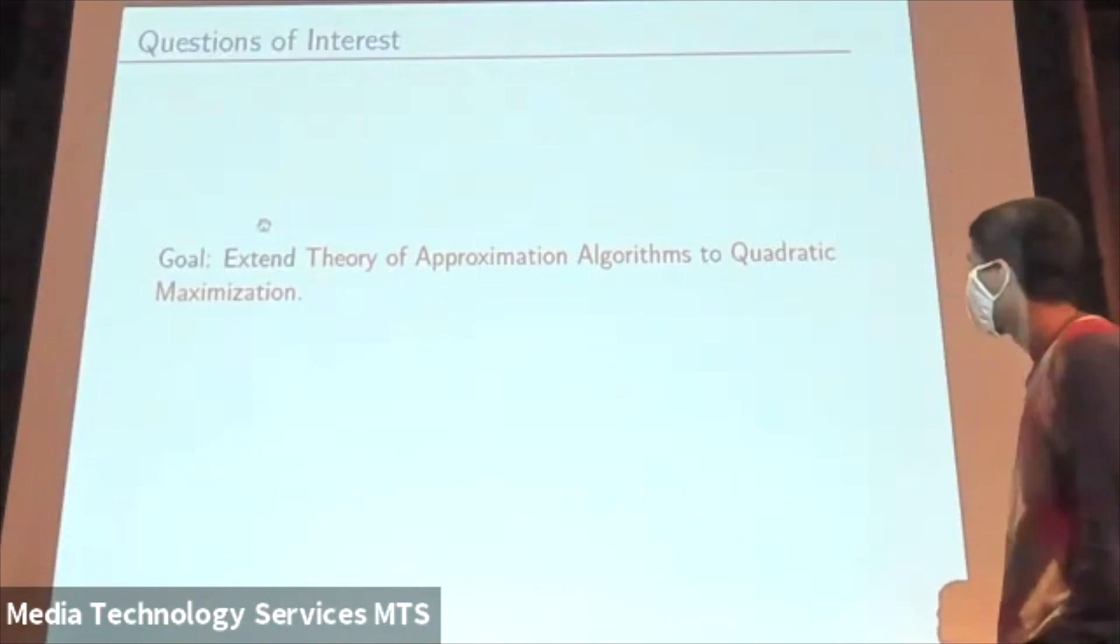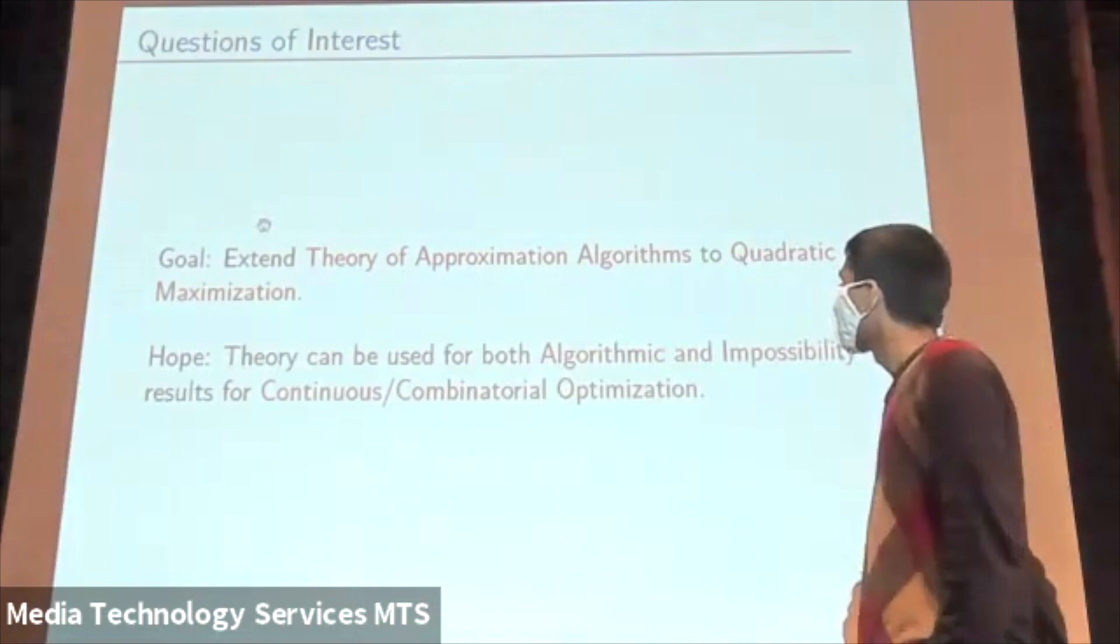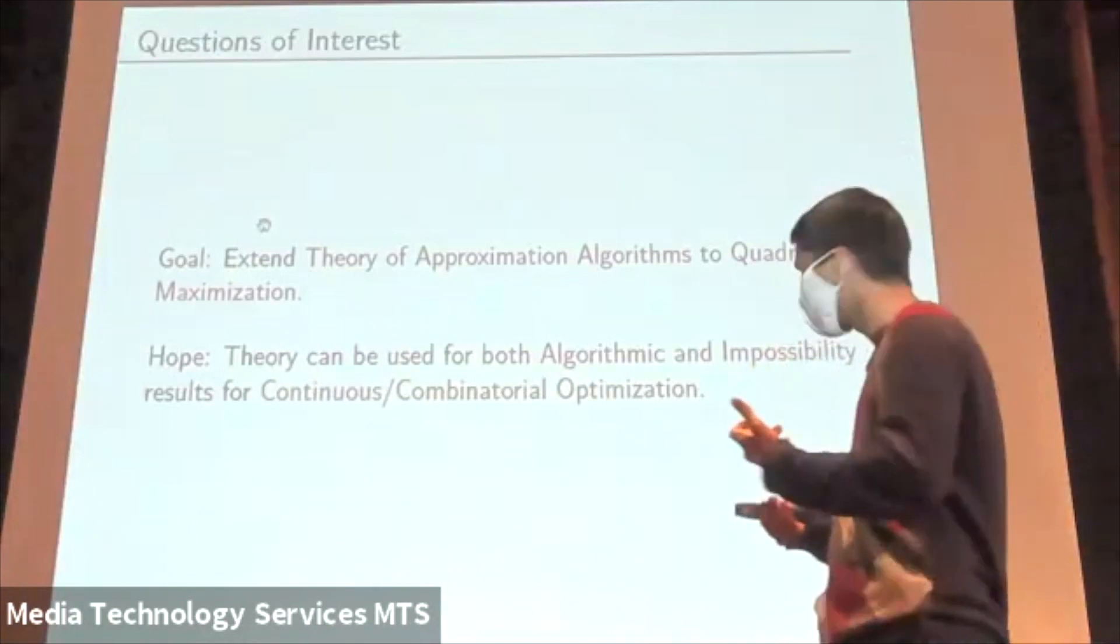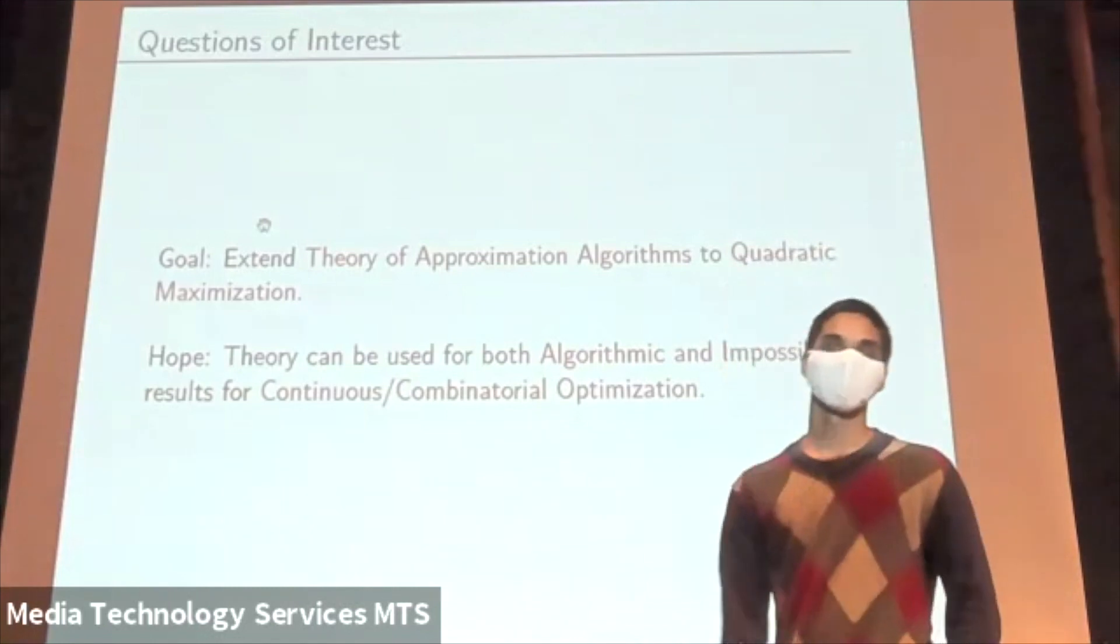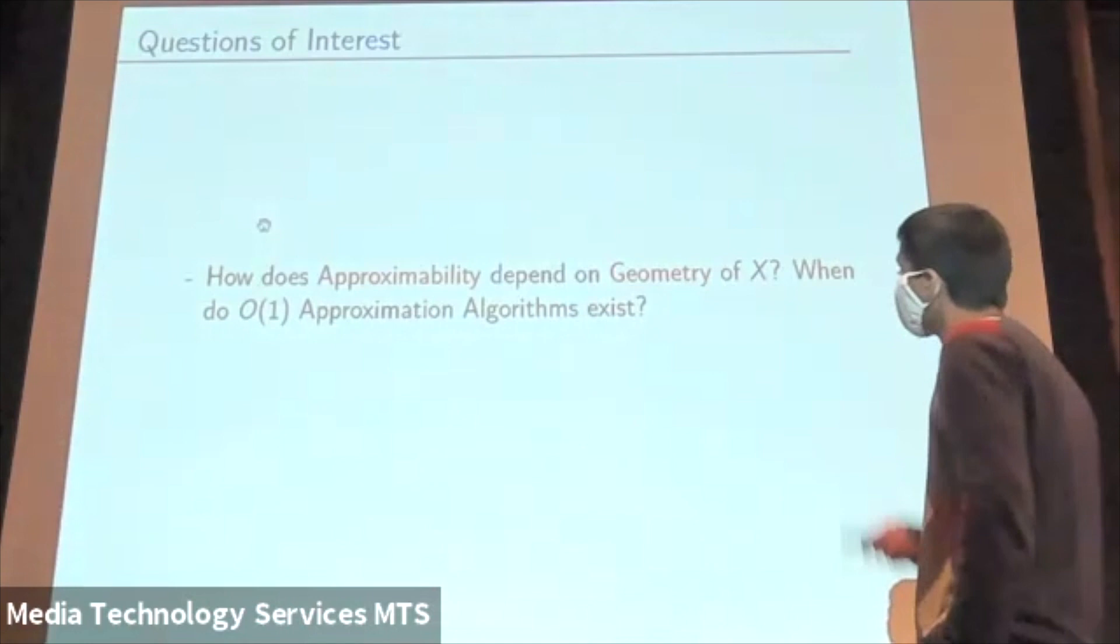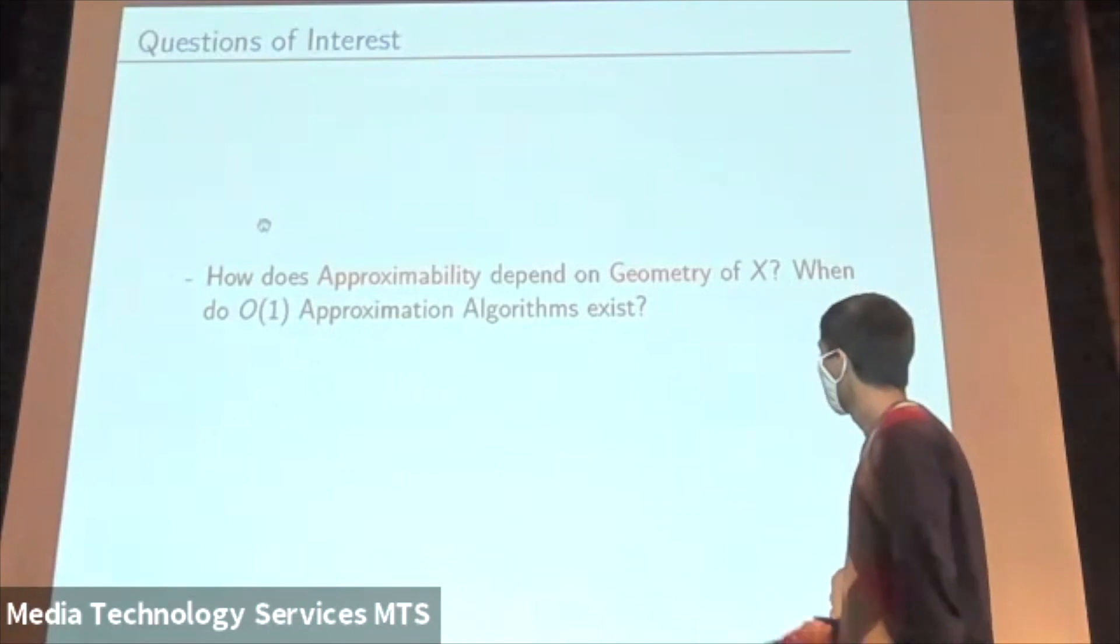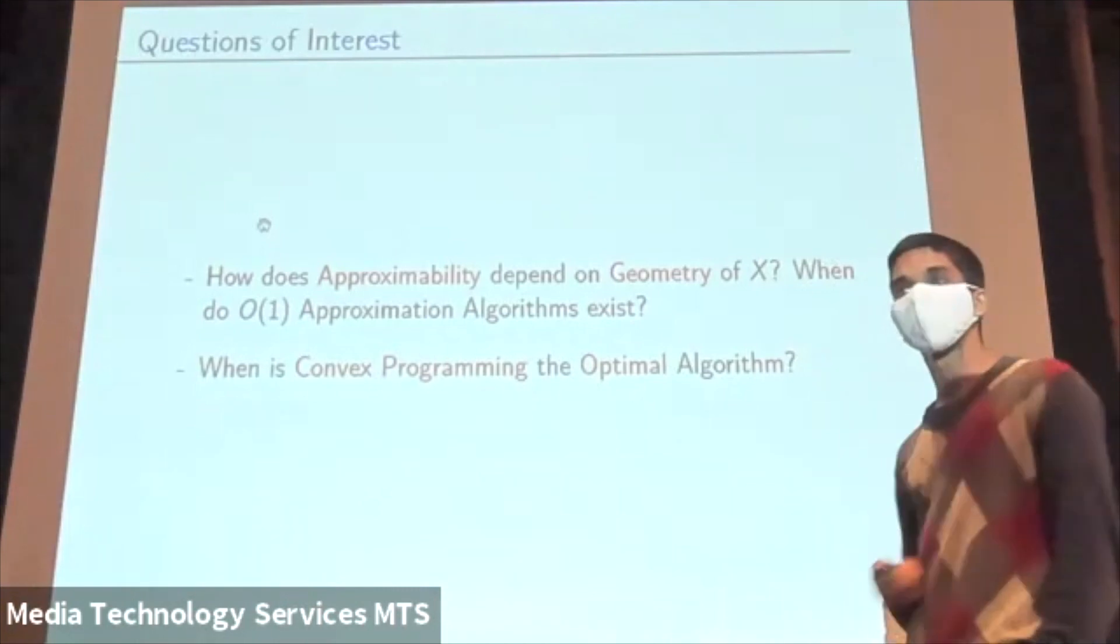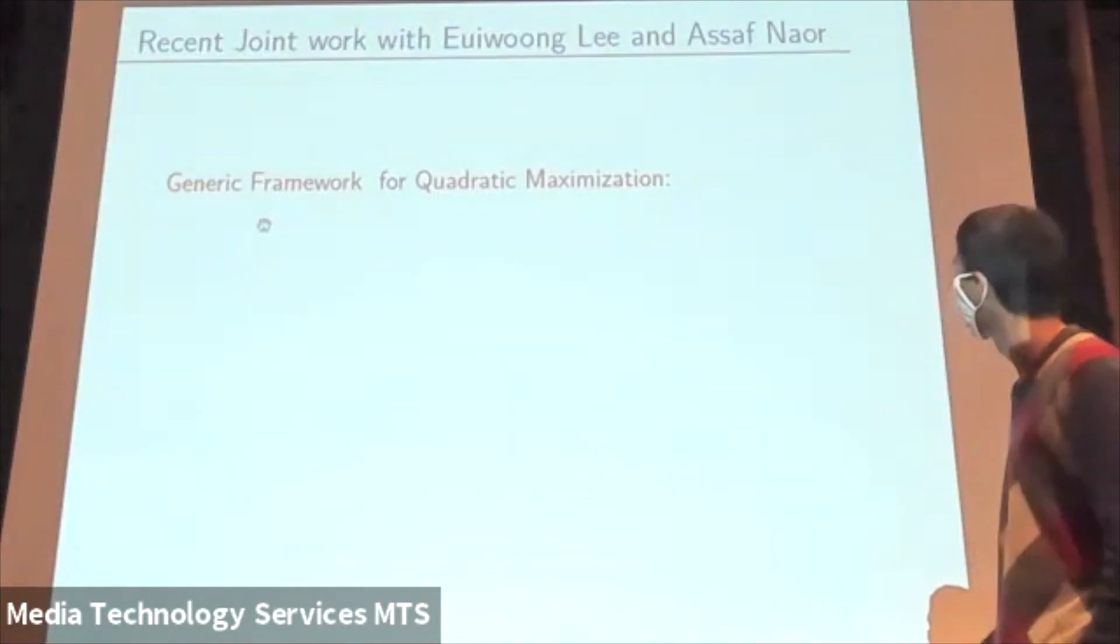Given how expressive this is, the questions I'm interested in broadly are: I want to extend this theory of approximation algorithms to this rich family of problems. The hope is that this theory can be used to obtain new algorithmic and impossibility results by treating it in a principled manner, for both continuous and combinatorial optimization problems. More specifically, how does the approximability of this problem depend on the geometry of the norm X? When do constant factor approximation algorithms exist? And, when is convex programming the optimal algorithm?